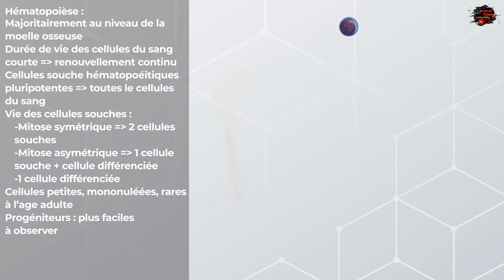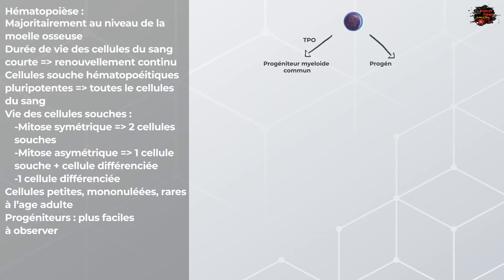Les cellules souches vont d'abord donner des progéniteurs communs. En premier, on aura les progéniteurs myéloïdes-érythroïdes communs qui se développent sous l'effet de la thrombopoïétine, par exemple. Puis, nous avons les progéniteurs lymphoïdes communs qui se développent sous l'effet de l'interleukine 7, par exemple, parmi d'autres facteurs.